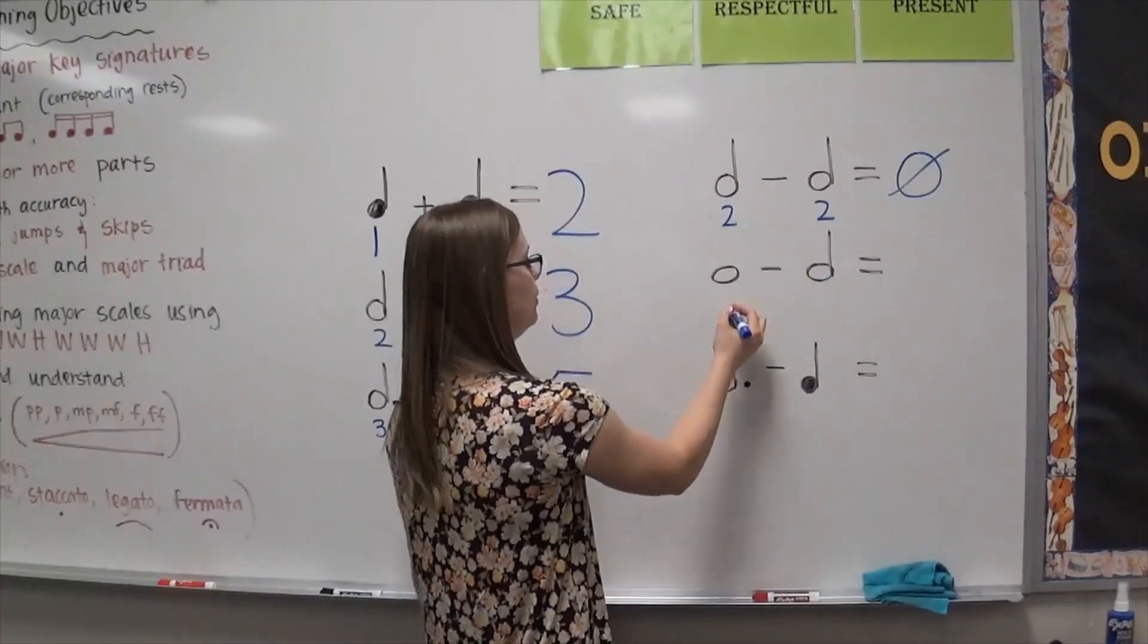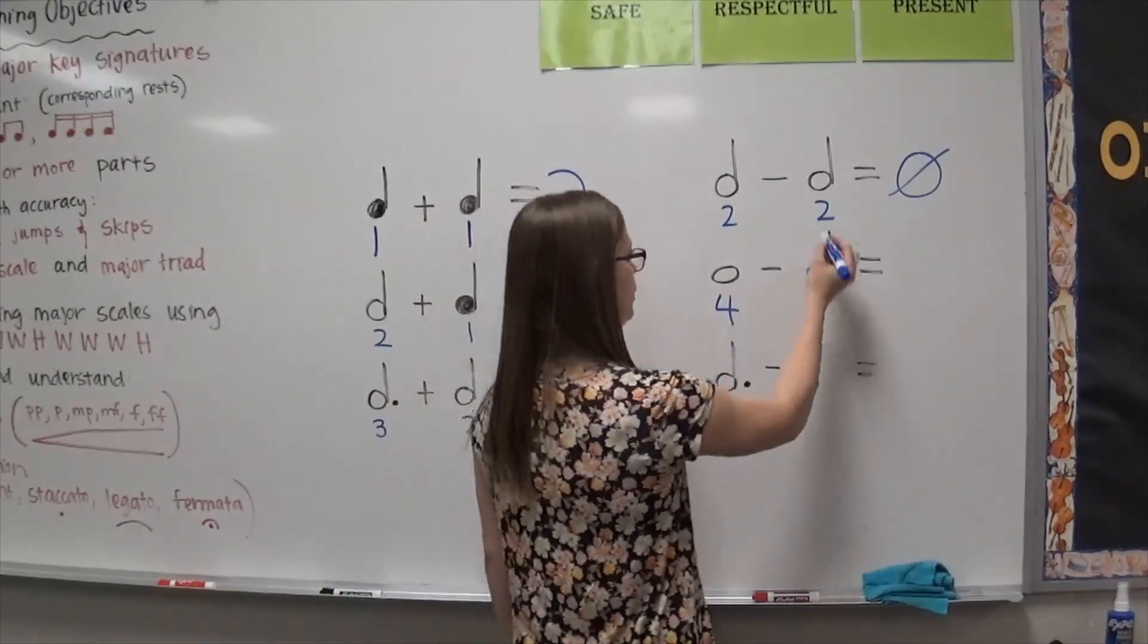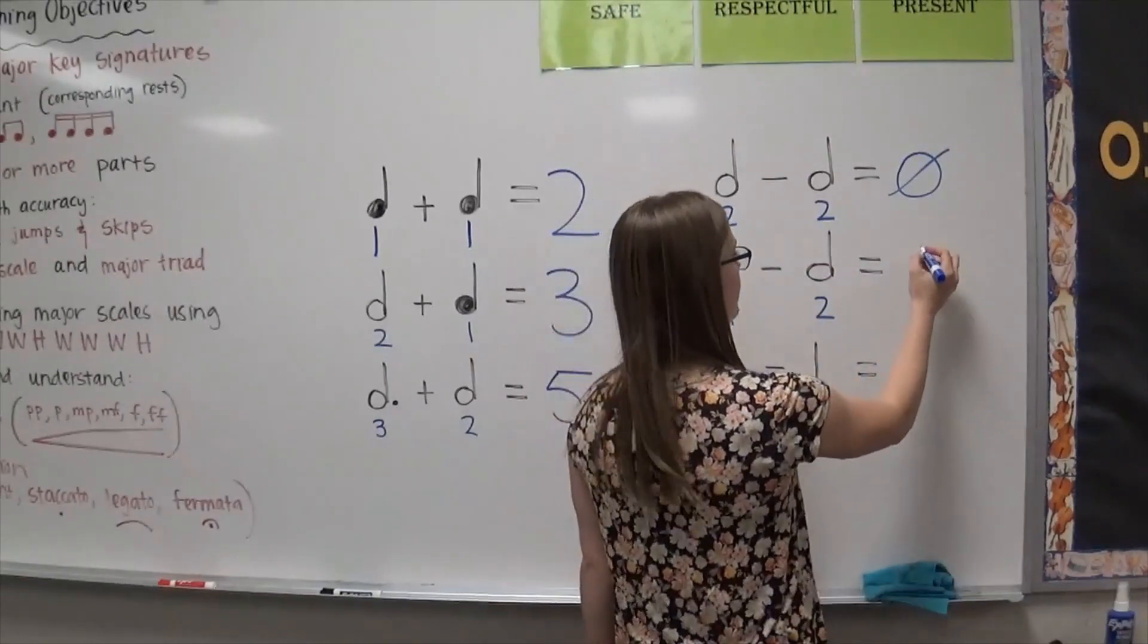A whole note is how many beats? Four. We know that a half note is two. Four minus two? Two.